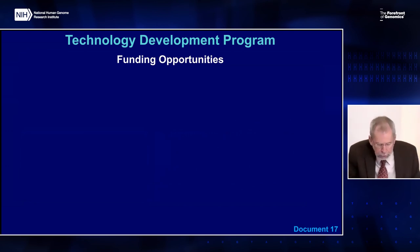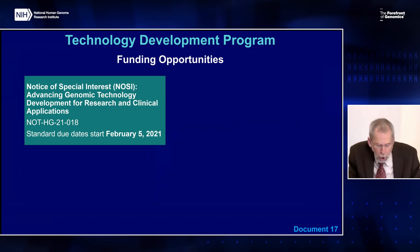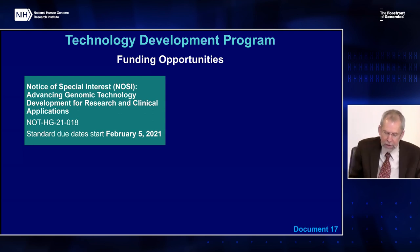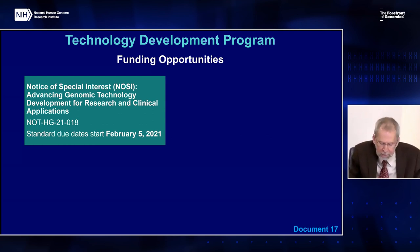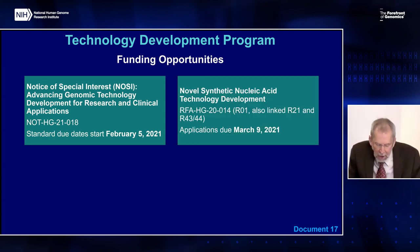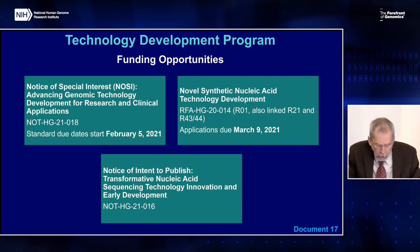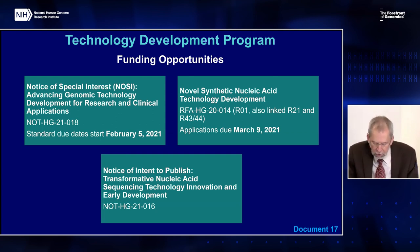NHGRI's technology development program continues to expand and evolve, enabling new and improved technologies to foster genomic discoveries. New funding announcements include a Notice of Special Interest in advancing genomic technology development for research and clinical applications, applying to parent R01, R21, and SBIR small business announcements. The newest initiative, the Novel Synthetic Nucleic Technology Development Request for Applications, has an upcoming due date of March 9th, seeking to fund research in novel enzymatic, biological, chemical, and physical approaches along with instrumentation for synthetic nucleic acids. A Notice of Intent to publish the Transformative Nucleic Acid Sequencing Technology Innovation and Early Development funding opportunity also emphasizes NHGRI's investment in innovation and early development for nucleic acid sequencing.